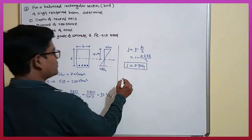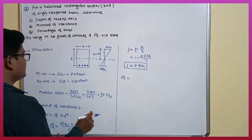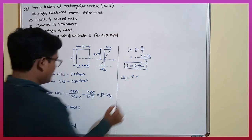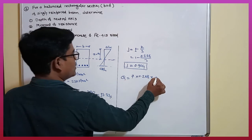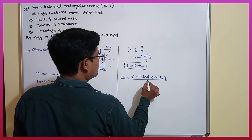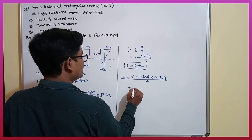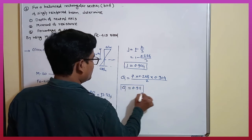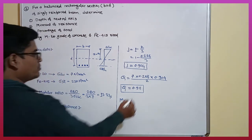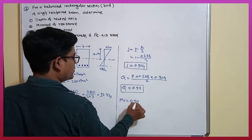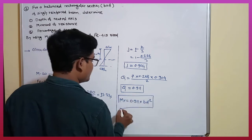We have to put the values of j, k, and σ_cbc. So q = σ_cbc × k × j / 2 = 7 × 0.288 × 0.904 / 2 = 0.910. Therefore, the moment of resistance MR = 0.911 × bd².